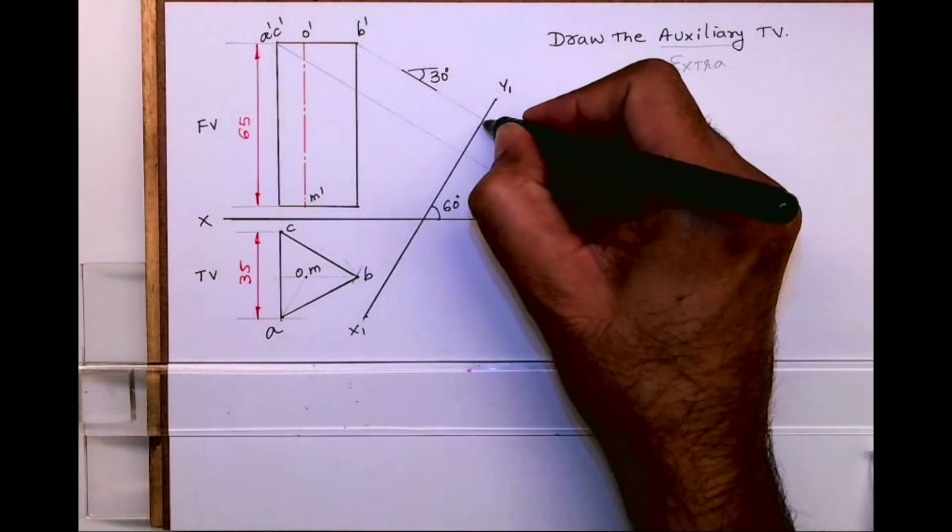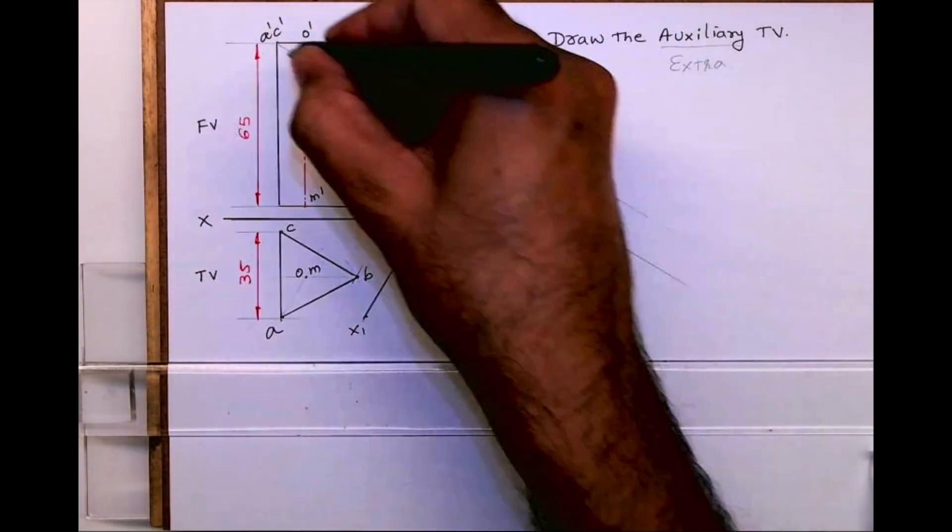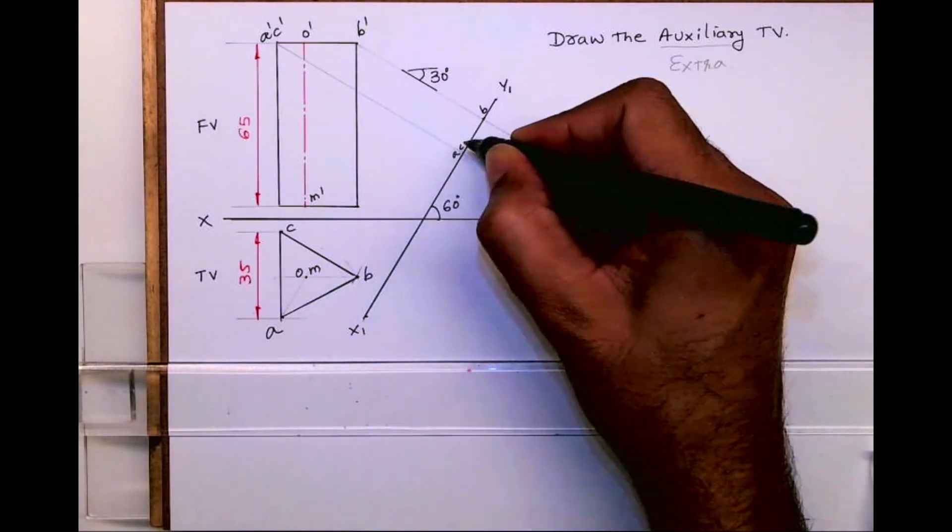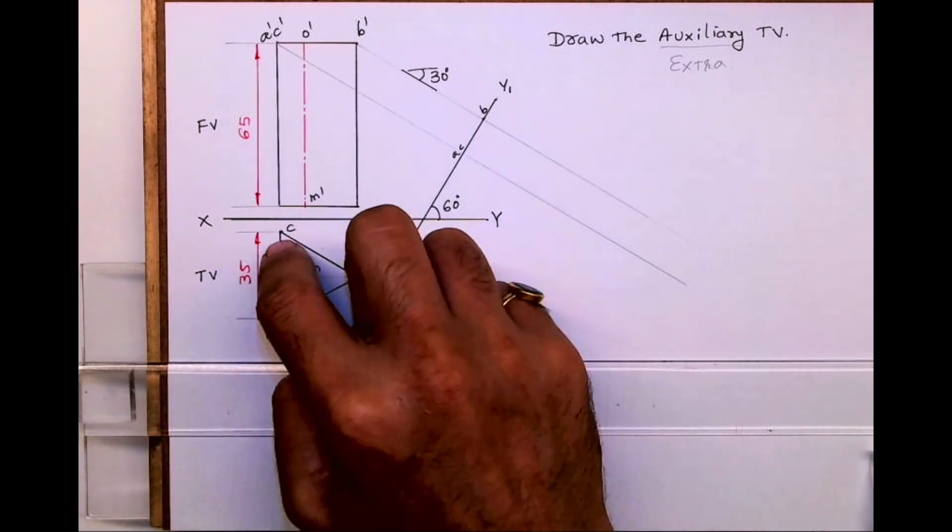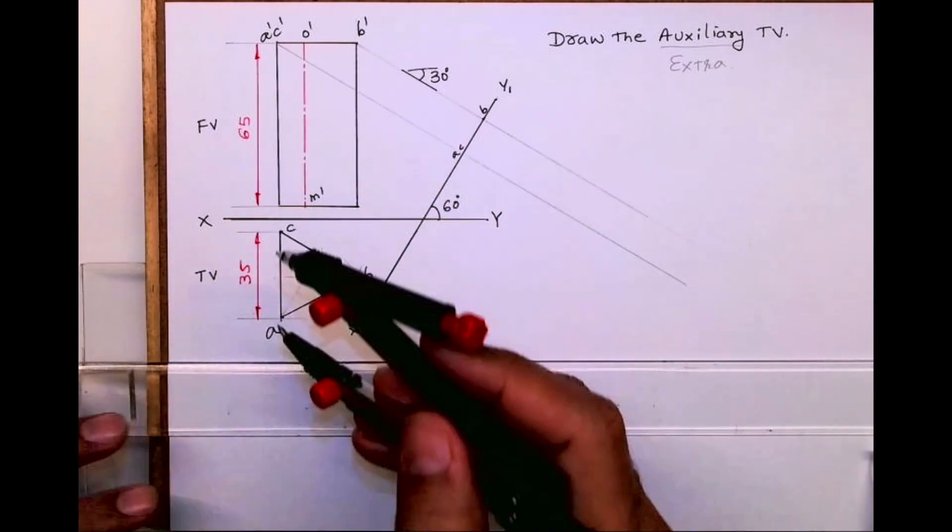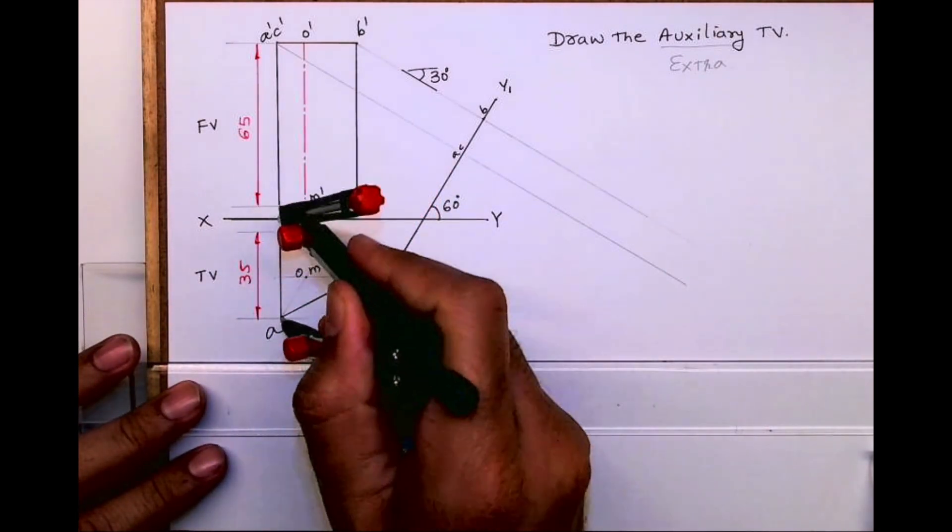Now what I will do, I will transfer width. See this. First I am writing A, B, and C on that X1 Y1. Now I need to transfer this width. What I will do, I will take XY to A, whatever distance it is, I will take that distance.